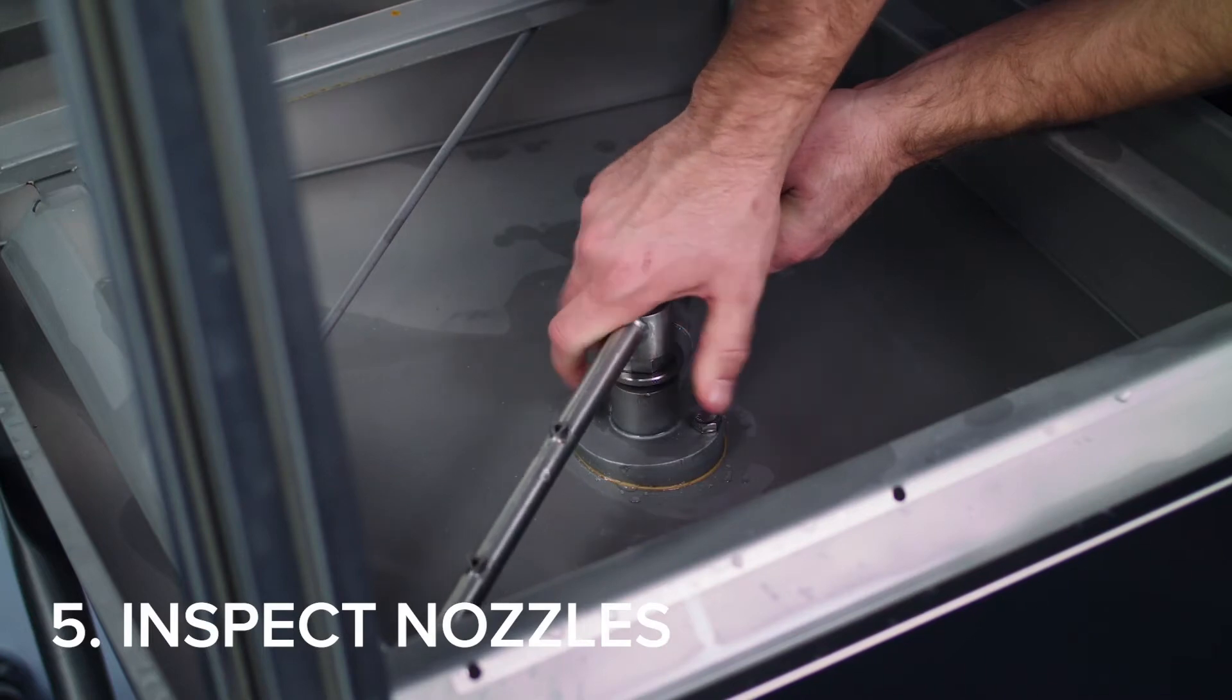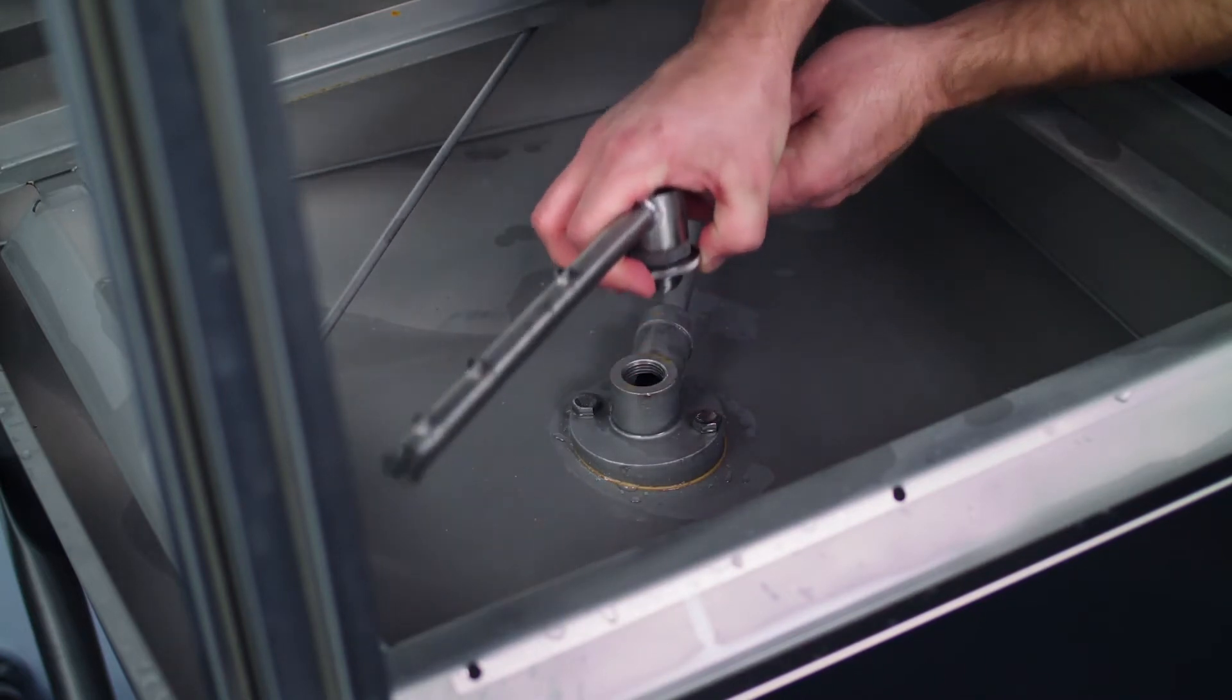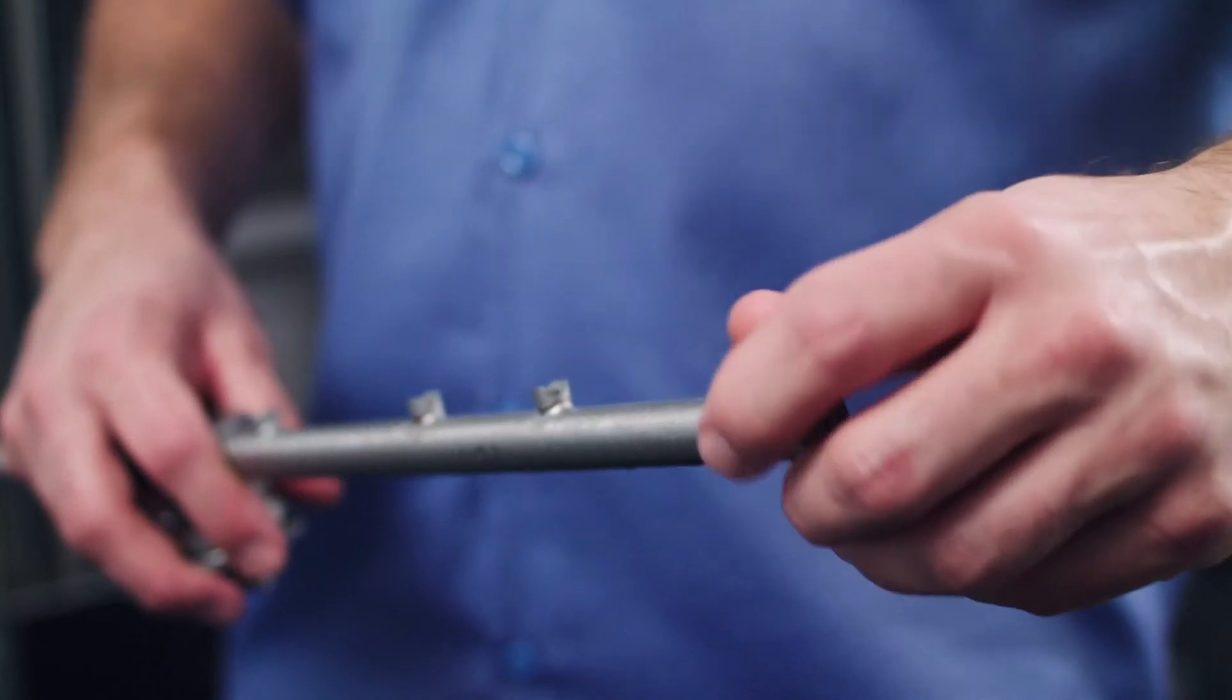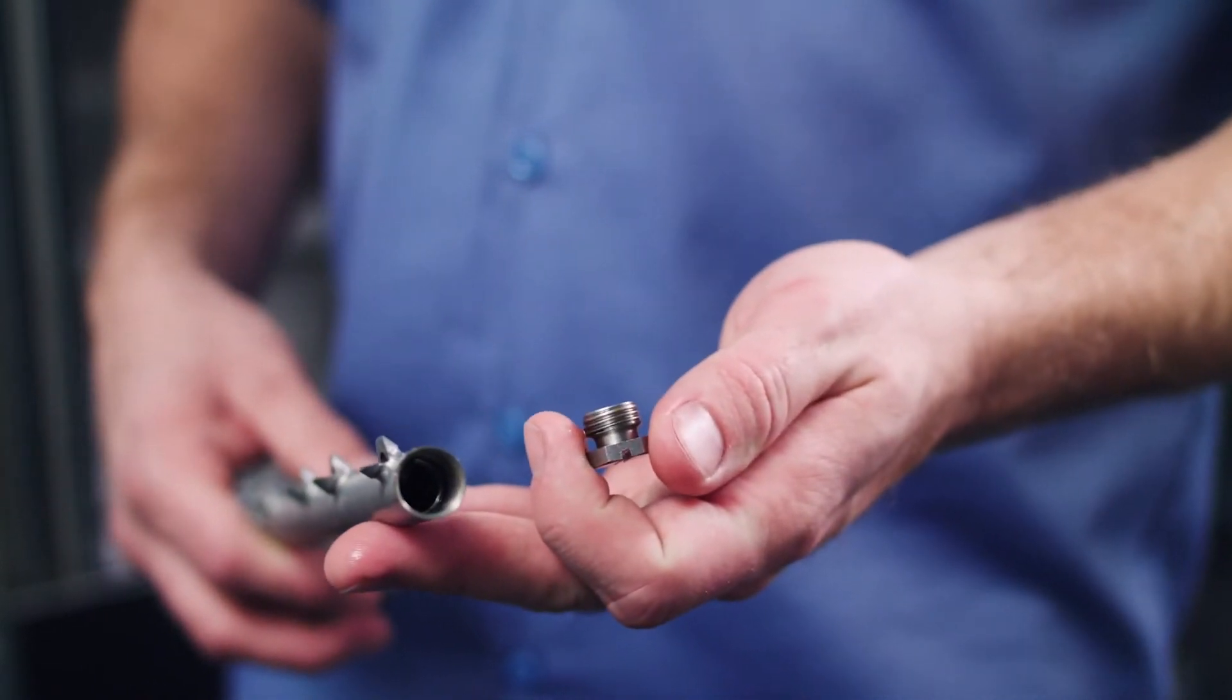Remove the wash and rinse arms and verify the nozzles are free from obstruction. If clogged, remove the end caps, clean with a brush, and flush with fresh water. Ensure the end caps are securely refastened.